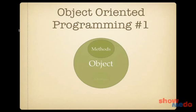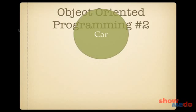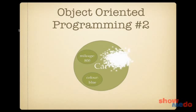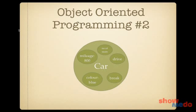Objects typically have methods and attributes. Let's use the printer example. A printer has attributes: it has a colour, a size, maybe a number of buttons, and it has methods like print or scan if it's an all-in-one device. Let's assume we've got a car object — it has attributes like its colour, its mileage, and methods like drive or brake. Number of seats is an attribute as well.